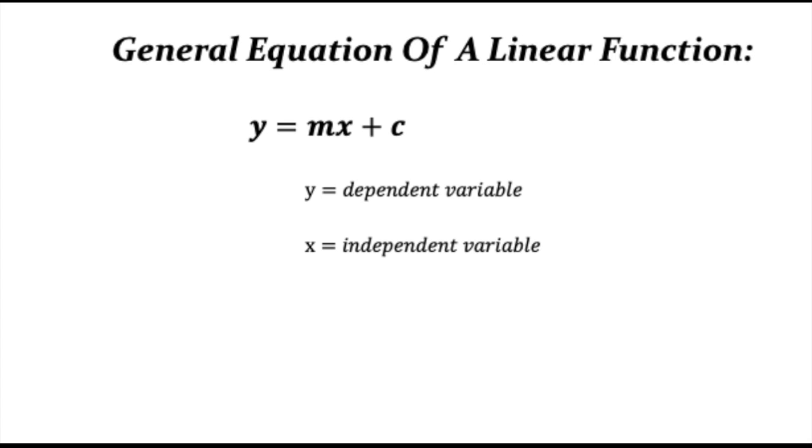However, x is independent variable because x does not depend on y. It's just how it is. For instance, a simple example will be time and anything else that increases over time. Time does not change. You can't control time. However, time is... Most of the experiments that you do, time will be independent because it does not depend on y.